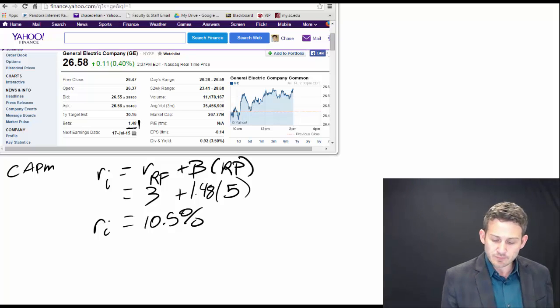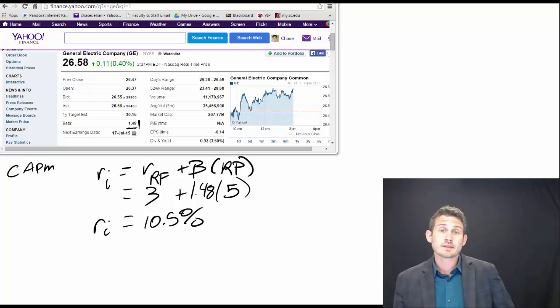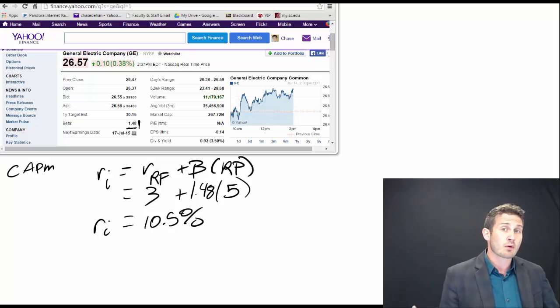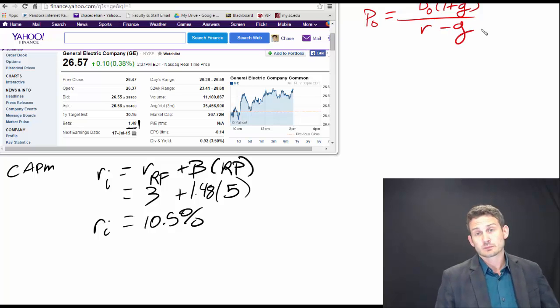So we're showing a required return of 10.5%. Now we can put this into our dividend discount model or the constant growth model, which is basically telling us that our price today is equal to our dividend today multiplied by one plus our growth rate divided by R minus G.